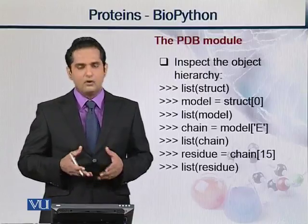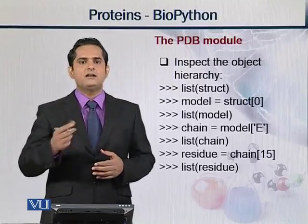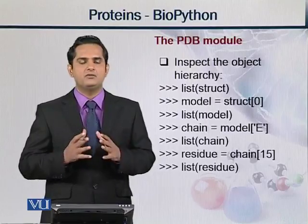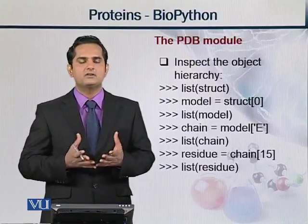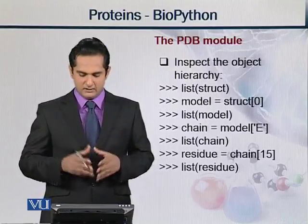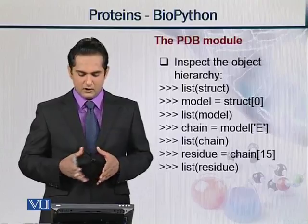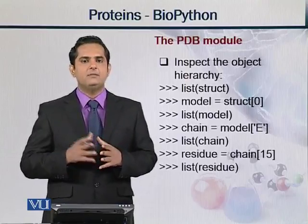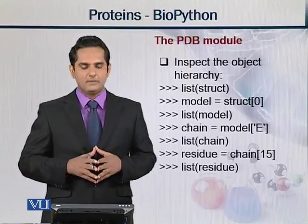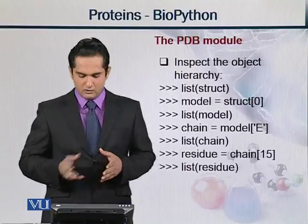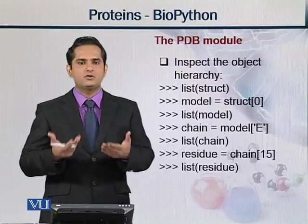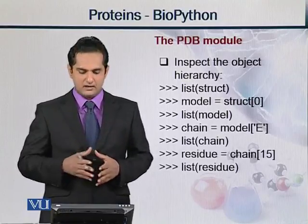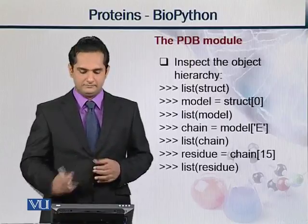Chain model hi, aur uske baad uski kya inner structure kya hai, chain ki kya information hai, amino acids kya hain, unka inner structure kya hai — yeh dekhne ke liye chain ki command use karenge. Aur phir isi tarah amino acid residue kya hai, uske liye bhi hum residue ki command use karenge, aur wo humein list karne ke liye, yani ki show karne ke liye, hum list ki command jo last mein di gayi hai, woh likhenge.